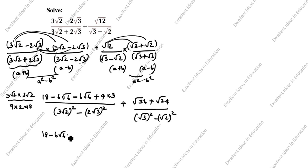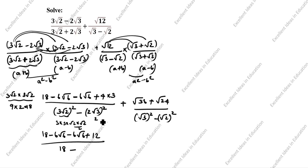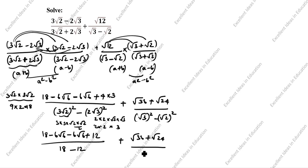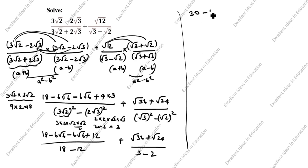Next, computing the terms: 2 into 2 into root 3 into root 3 — root 3 into root 3 is 3, and 2 into 2 is 4, so 4 threes are 12. Then plus root 36 plus root 24, divided by root 3 into root 3 is 3, minus root 2 into root 2 is 2. So the denominator of the first fraction becomes 18 minus 12, which is 6.